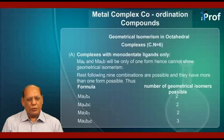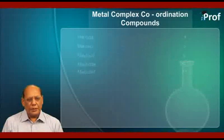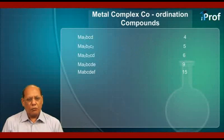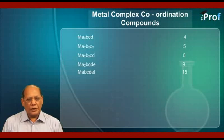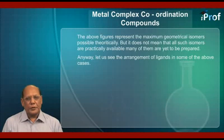So MA2B4 will have two forms. MA4BC has 2 isomers, MA3B3 has 2, MA3B2C has 3, MA3BCD has 4, MA2B2C2 has 5, MA2B2CD has 6, MA2BCDE has 9, and finally MABCDEF — where all six monodentate ligands are different — will have 15 forms possible. The above figures represent the maximum geometrical isomers possible theoretically.